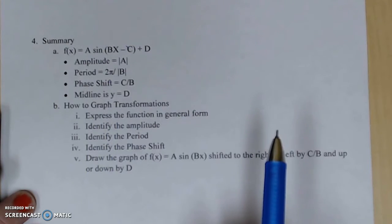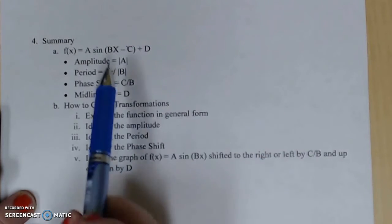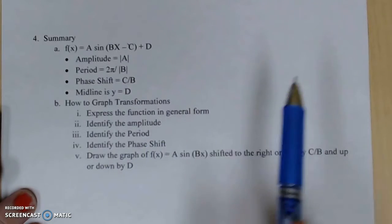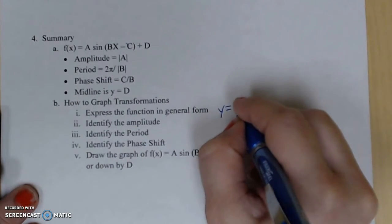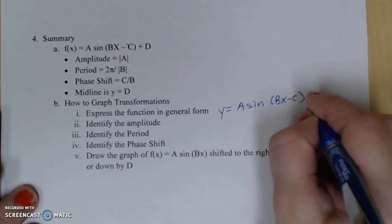Now how do you graph these new functions? How do you go from a function of Y equals sine X into this general form and graph it? First express the function in general form. If we're talking about sine, we're talking about A sine of BX minus C plus D.